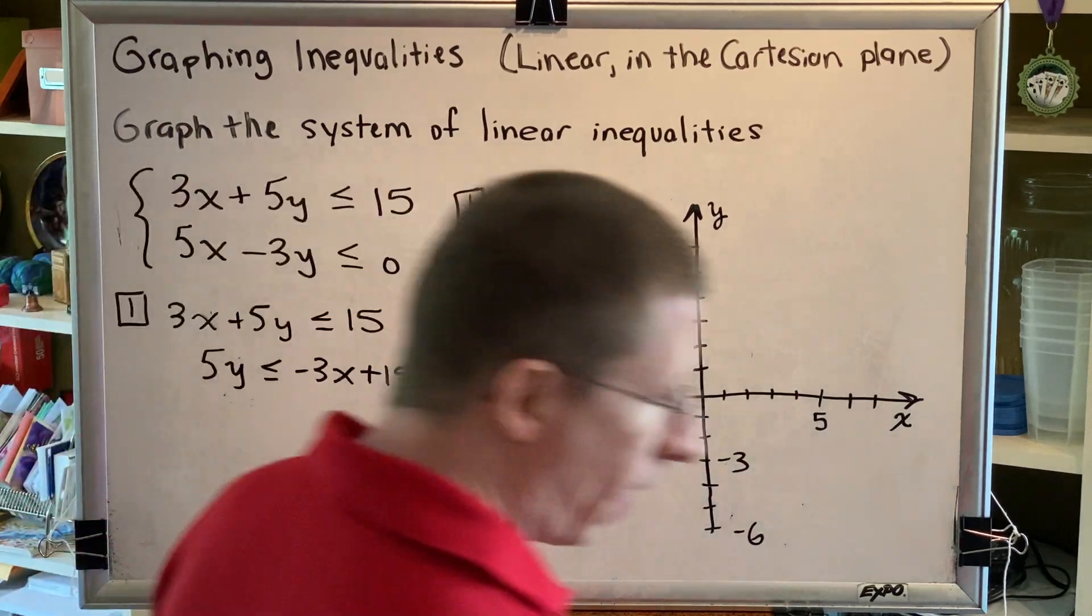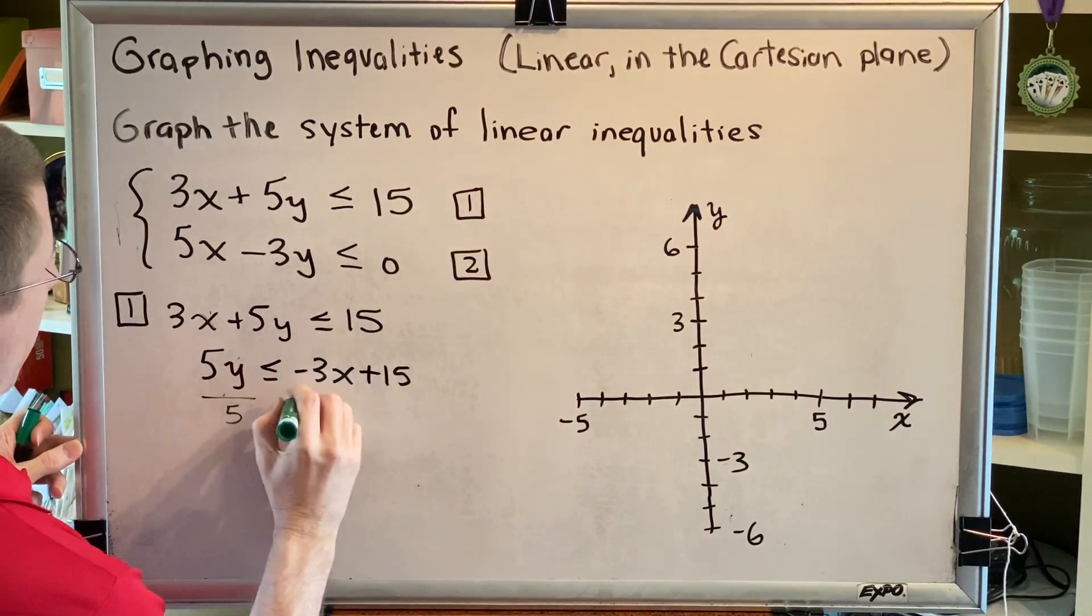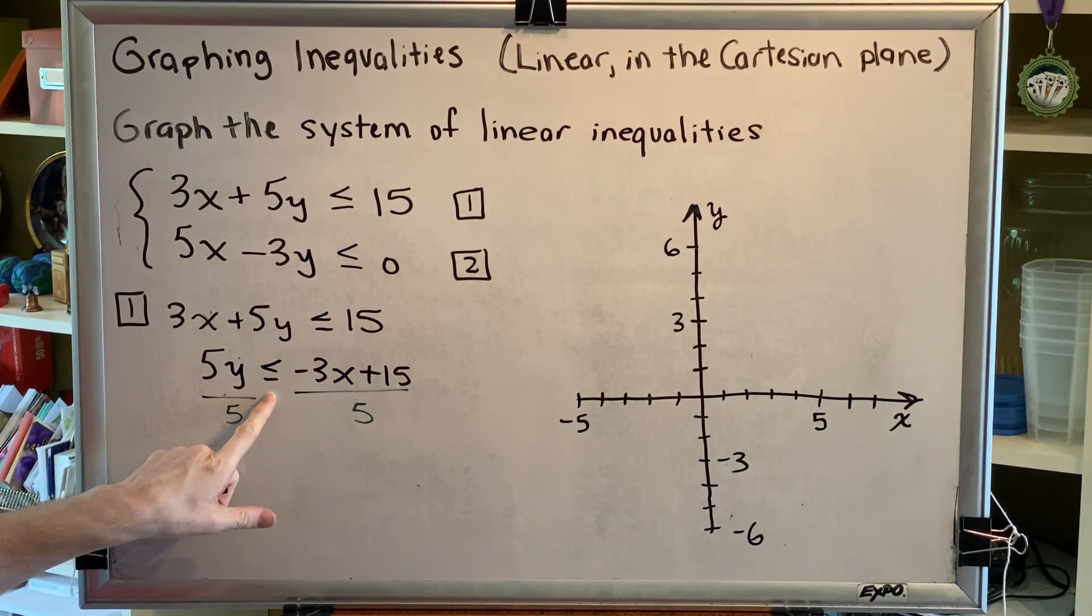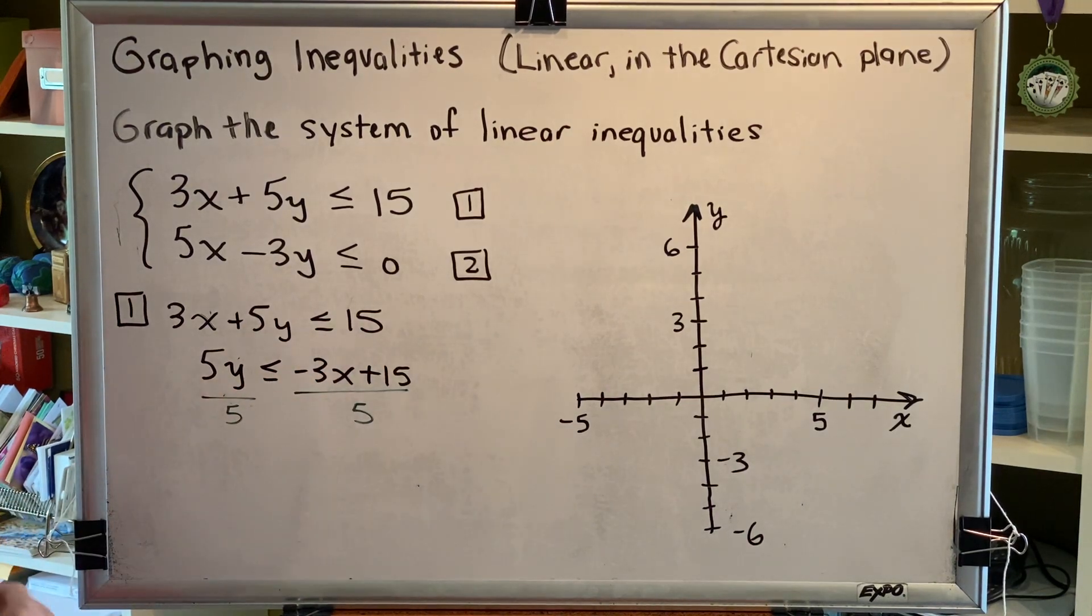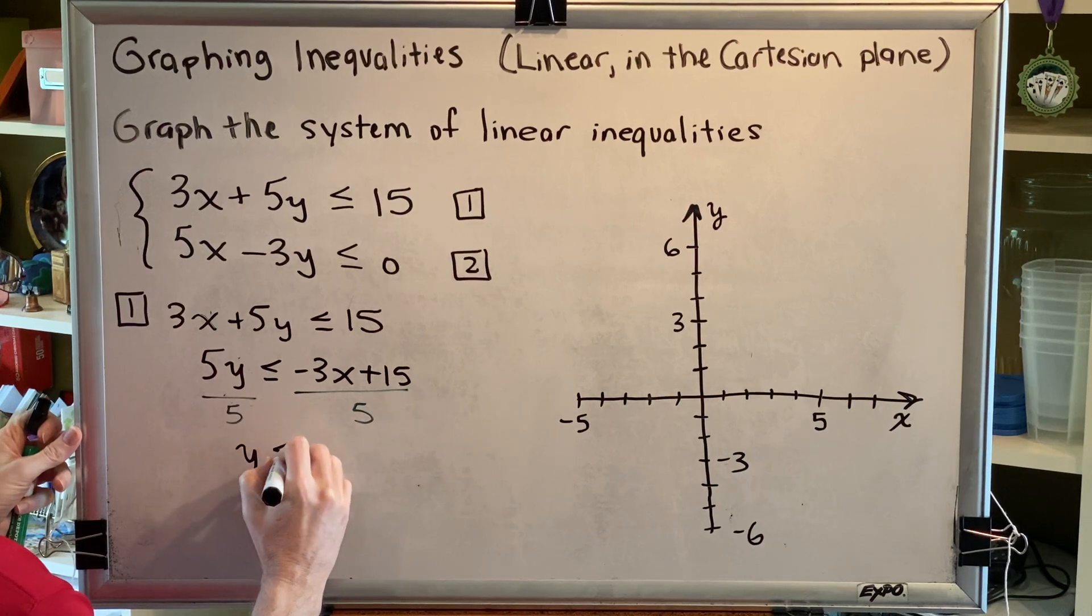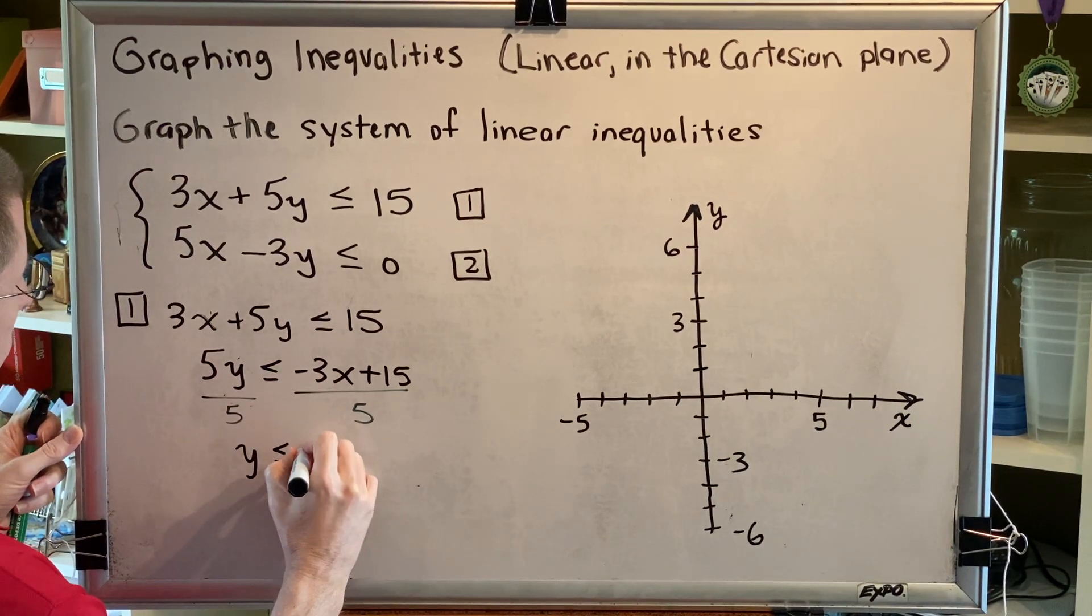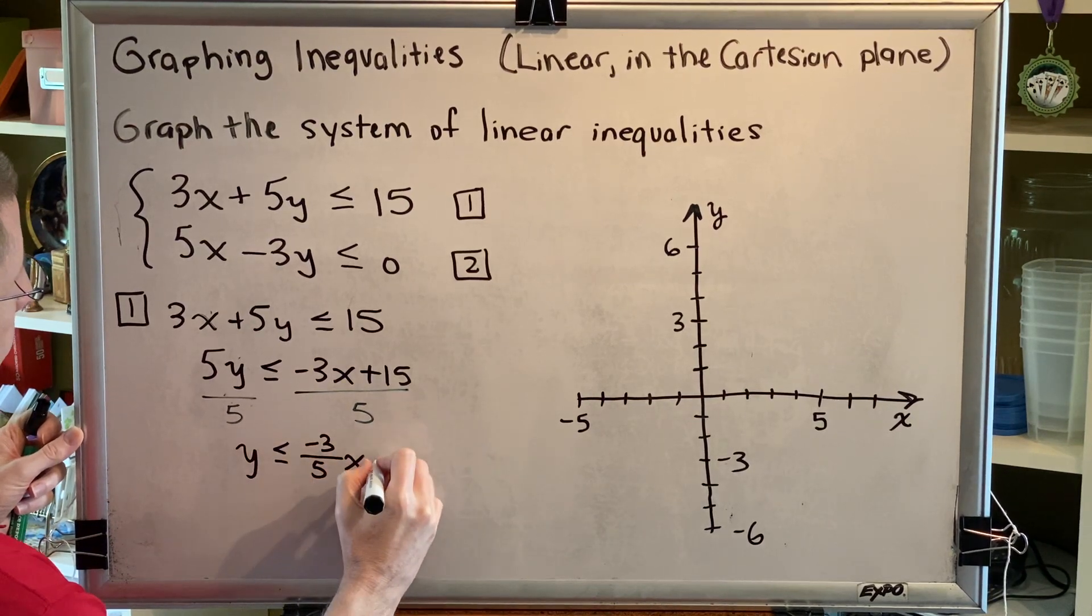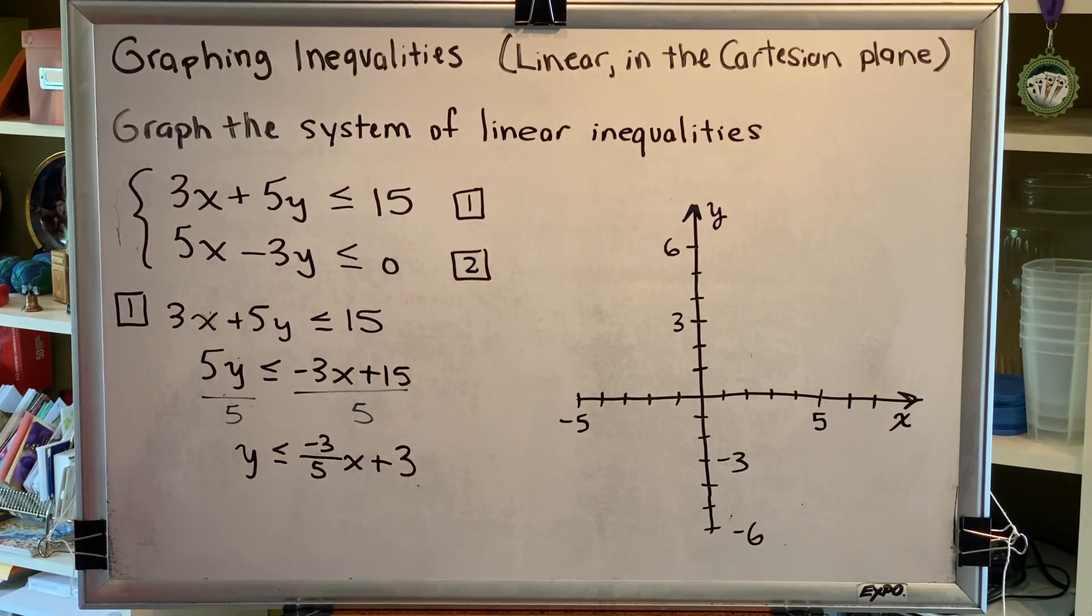Next, divide both sides by 5. Since 5 is a positive number, we do not have to swap the direction of the inequality symbol, and we do not have to change the signs of the terms on the right-hand side. So we have y is less than or equal to negative 3/5 x plus 15 divided by 5, which is 3. That completes step one.